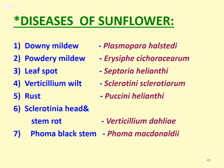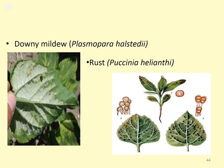Major diseases of sunflower: Downy Mildew (Plasmopara halstedii), Powdery Mildew (Erysiphe cichoracearum), Leaf Spot (Septoria helianthi), Verticillium Wilt, Sclerotinia sclerotiorum, Rust (Puccinia helianthi), Sclerotinia Head and Stem Rot, Verticillium dahliae, and Phoma Black Stem (Phoma macdonaldii). A photograph represents Downy Mildew at the back side of the leaf or floral primordia, which can cause around 90% yield loss. Rust, caused by Puccinia helianthi, is also shown.